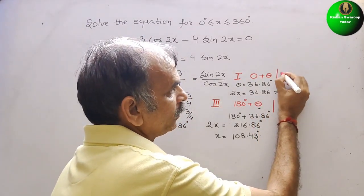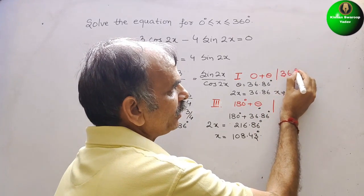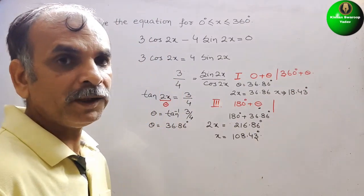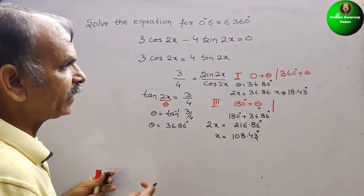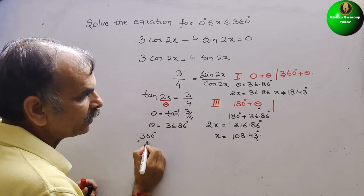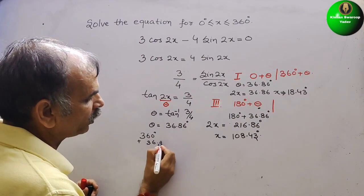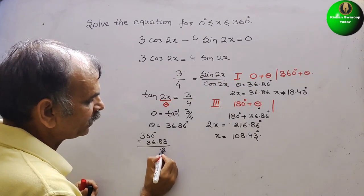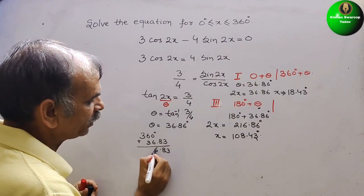First, 360 degree plus theta. So we can take 360 plus theta. Theta is 36.86.